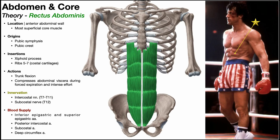That covers the pyramidalis muscle. Now for the rectus abdominis, shown here in green. Discounting the pyramidalis, the rectus abdominis is the most superficial core muscle of the anterior core. When someone has low body fat and/or hypertrophied rectus abdominis muscles, the segments are visible through the skin, giving the washboard-like appearance. The rectus abdominis is a segmental muscle, divided into different segments separated by tendinous intersections.